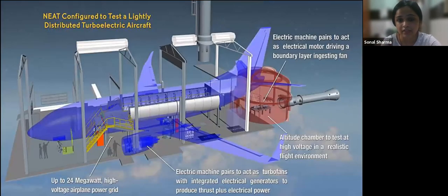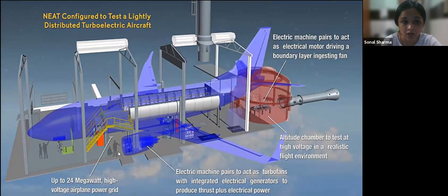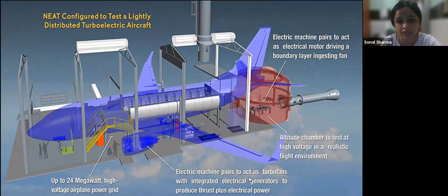This is a model of how we can test an electrified airplane. This is a 24-megawatt high-voltage airplane power grid. This is an electric machine pair used to test turbofans with an integrated electrical generator to produce thrust plus electrical power.